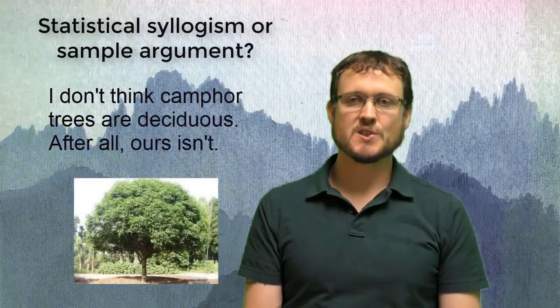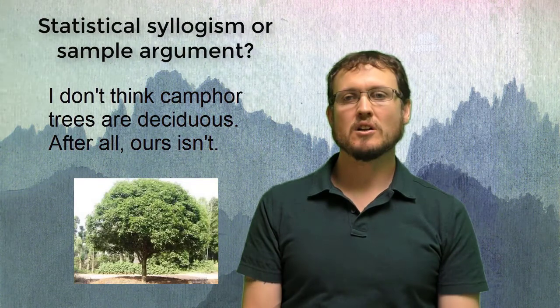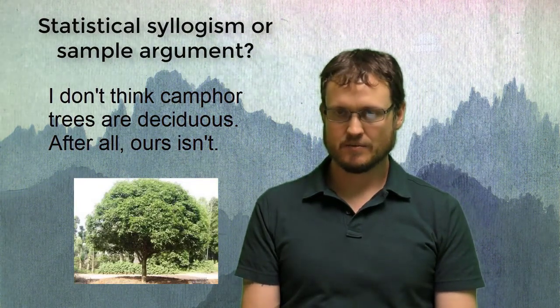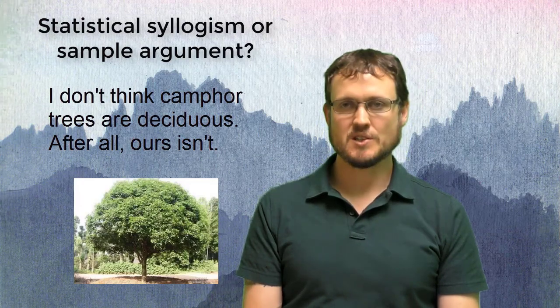Okay, so let me give you some examples of distinguishing between statistical syllogisms and sample arguments because these can be tricky, like I said before. So I'm going to throw an argument up on the board that says, I don't think camphor trees are deciduous. Deciduous is a property of a tree. After all, ours isn't.